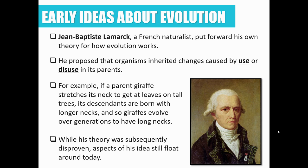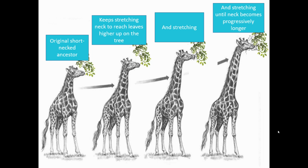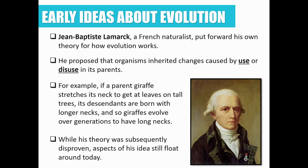A great example of Lamarck's theory is giraffes. Lamarck said if a parent giraffe stretched its neck to get leaves on a tall tree, then its descendants would be born with longer necks. So giraffes evolved over generations to have long necks. If a giraffe stretched its neck to reach leaves, its offspring would have a stretched neck, and if those offspring had to stretch a little more, they would produce offspring with an even longer neck. This theory has since been disproven, though we do still support some of what Lamarck said.